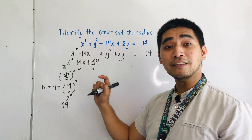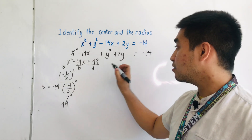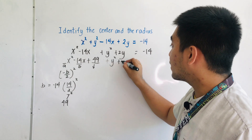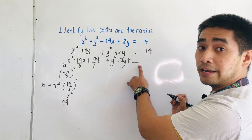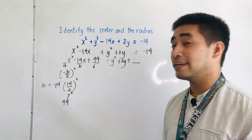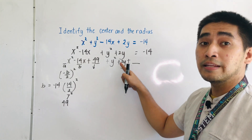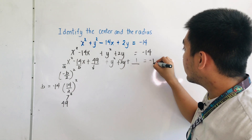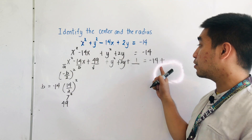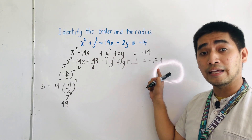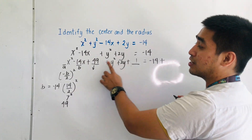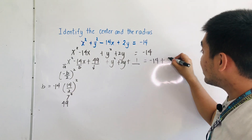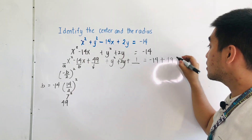So we have now completed the terms in x. Now let's find the completing term for y. We have y squared plus 2y plus blank. Using the formula negative b over 2 squared, our b here is 2, so negative 2 divided by 2 is negative 1, squared, giving us plus 1. On the right side, we have negative 14 plus 49 plus 1, because the terms being added must also be added to the right side.